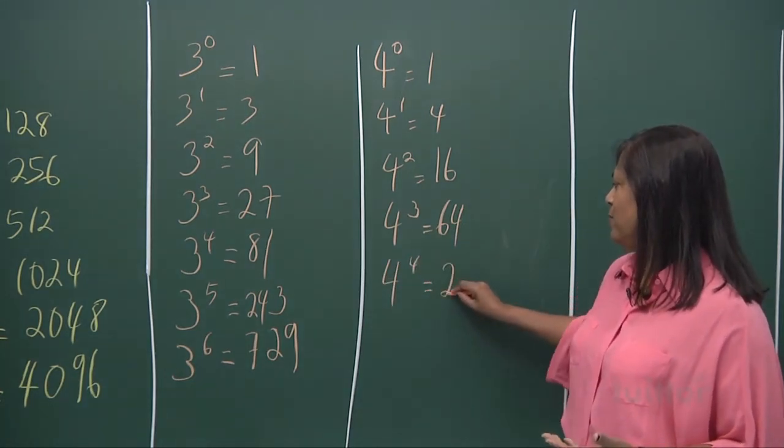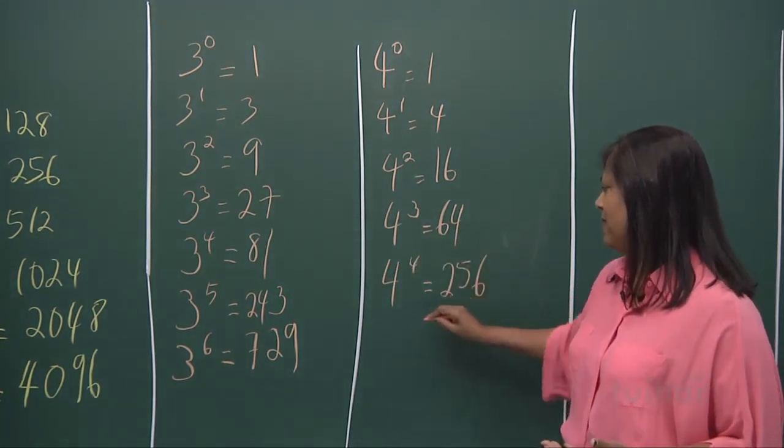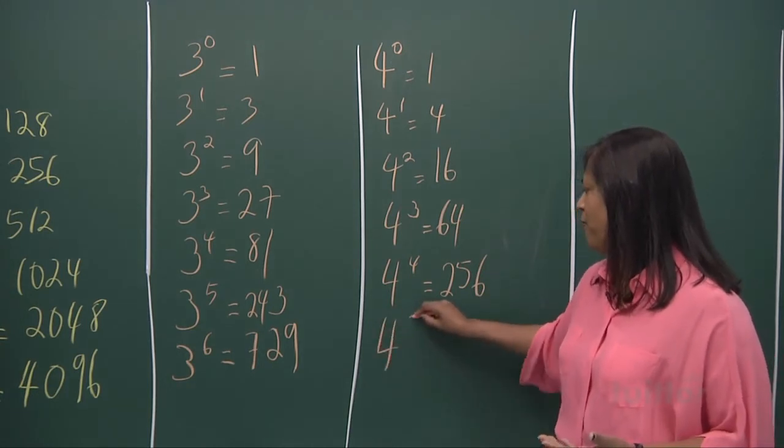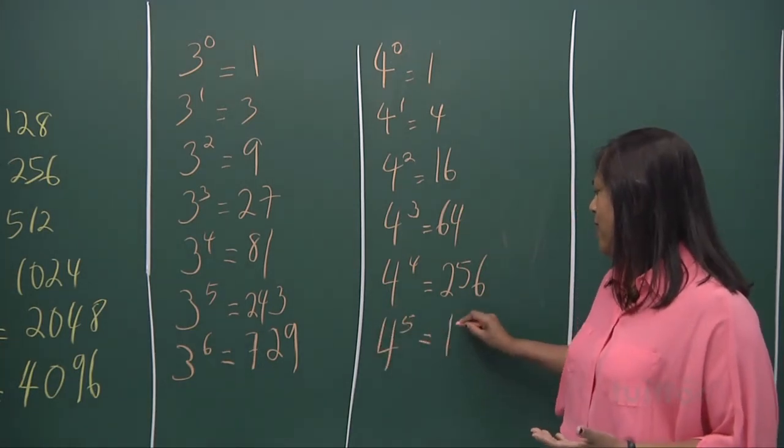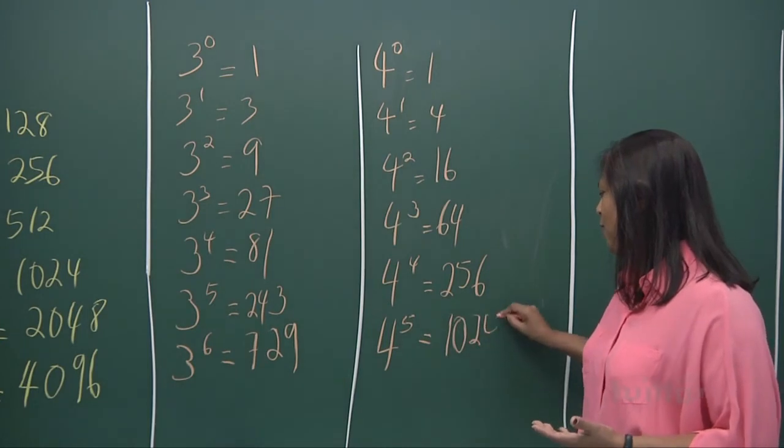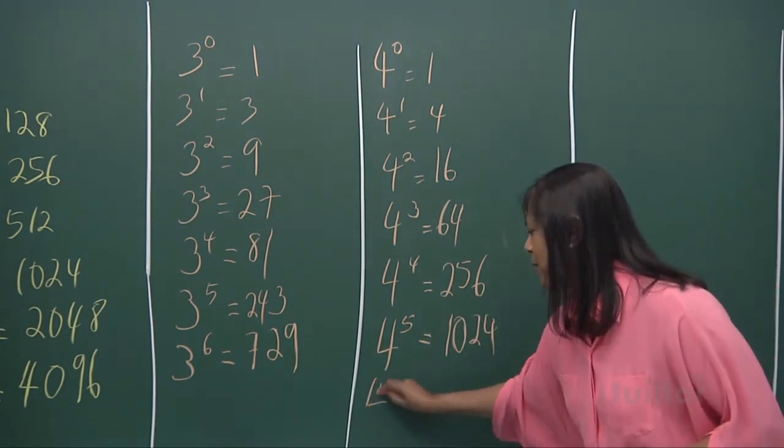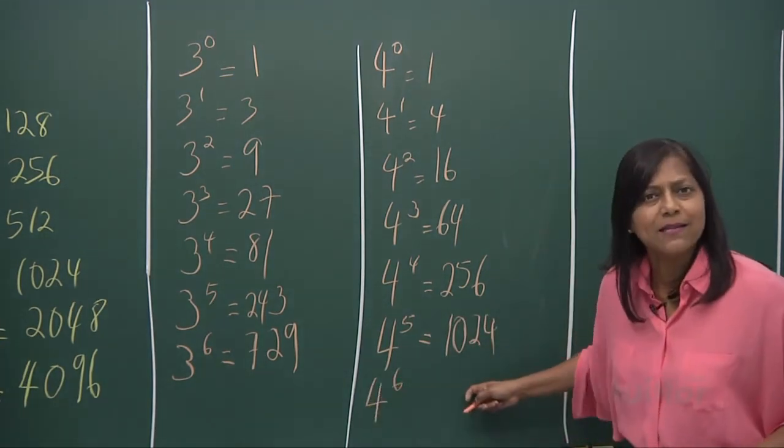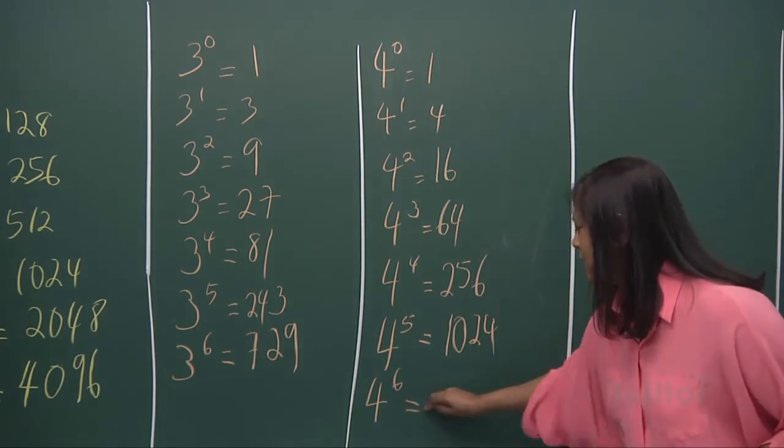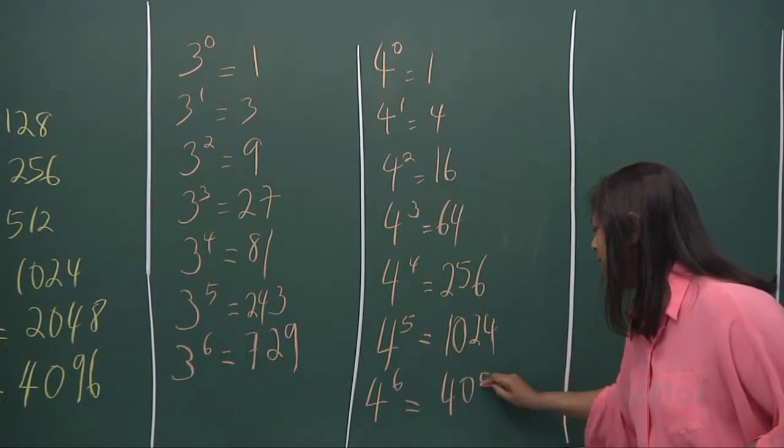And 4 to the power of 4. And 4 to the power of 5, you get a 1024. And 4 to the power of 6, multiply this 4 times, and you get 4096.